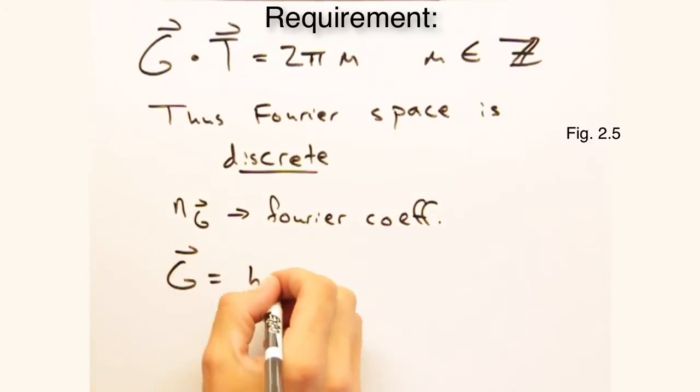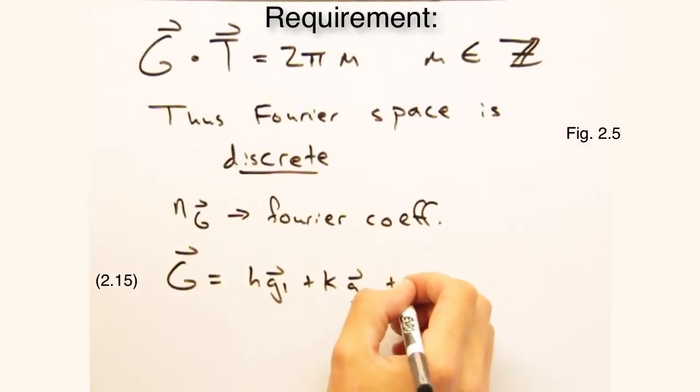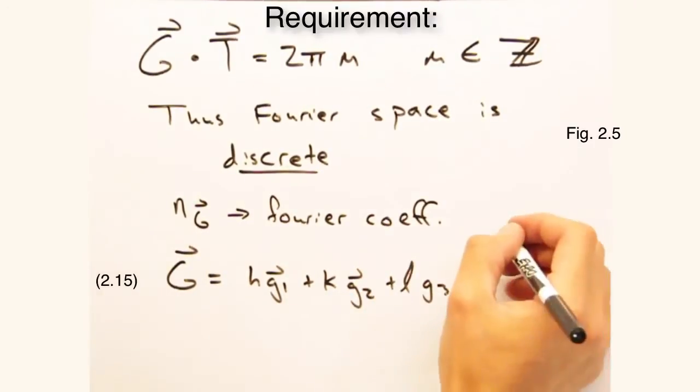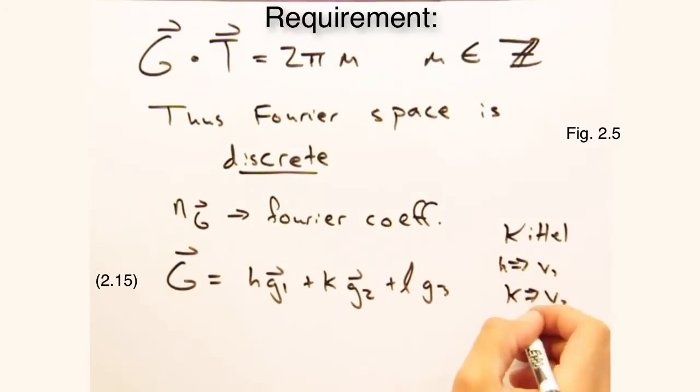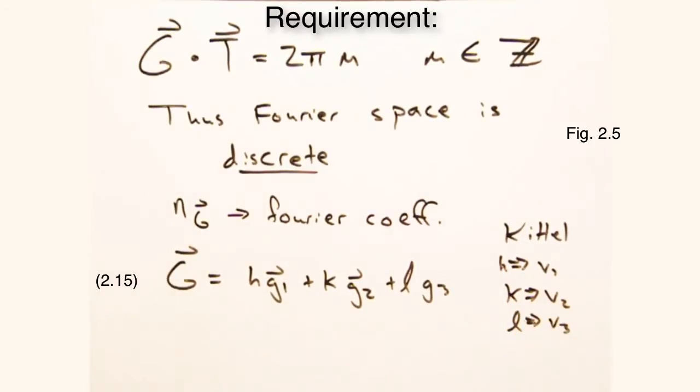Then, like our translation vector t, g is made up of three vectors, g1, g2, and g3, with integer pre-factors h, k, and l. Please note that in Kittel, these integer pre-factors are v1, v2, and v3. But nobody other than Kittel would ever use v1, v2, and v3. So we're sticking with h, k, and l in this class.